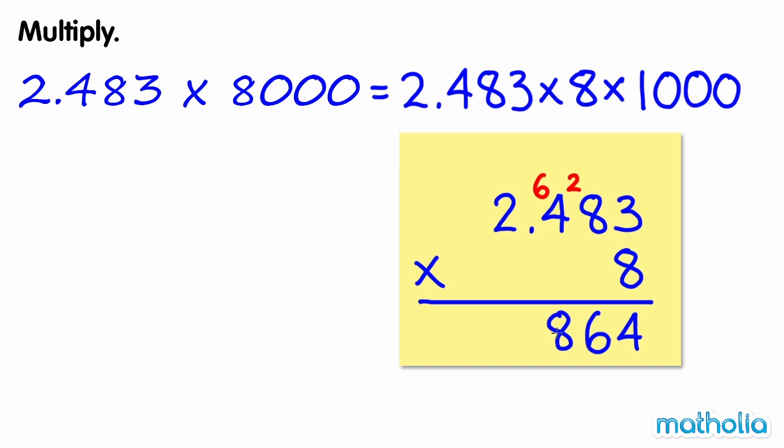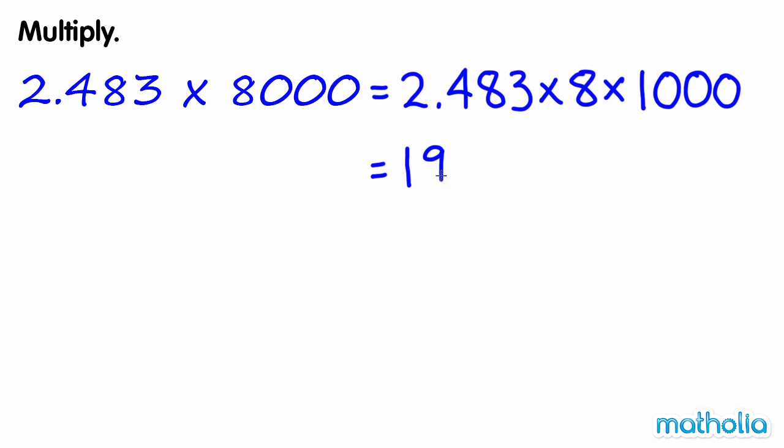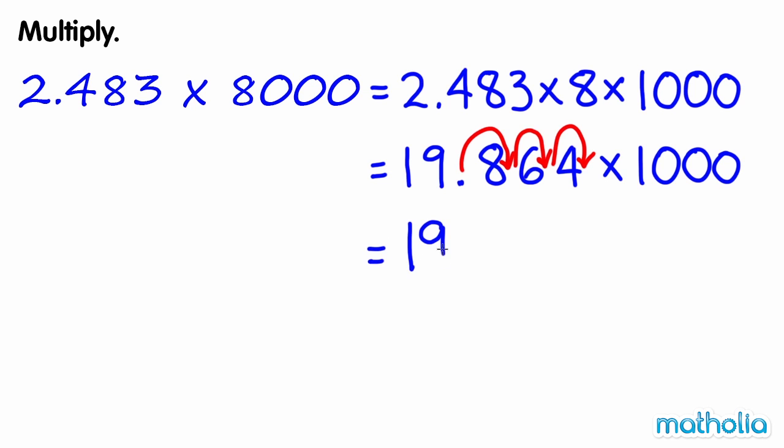2.483 times 8 equals 19.864. Multiply this by 1,000 by shifting the decimal point three places to the right. So 2.483 times 8,000 equals 19,864.